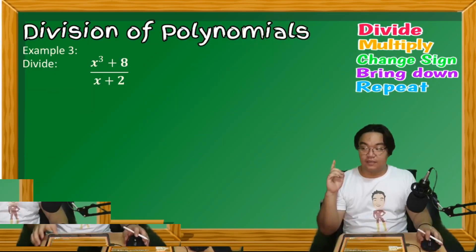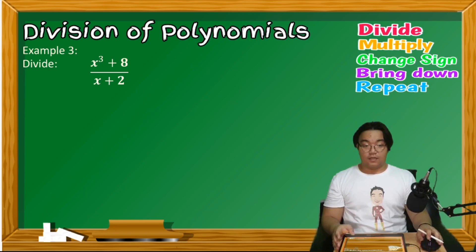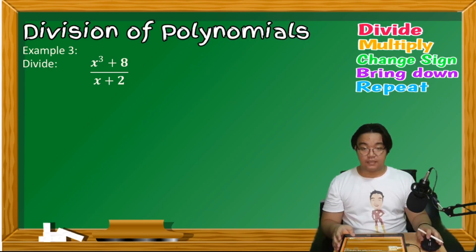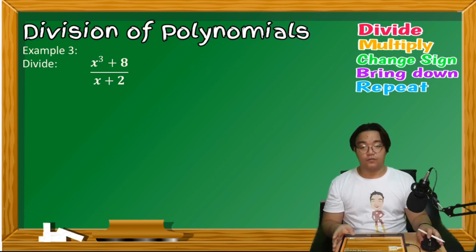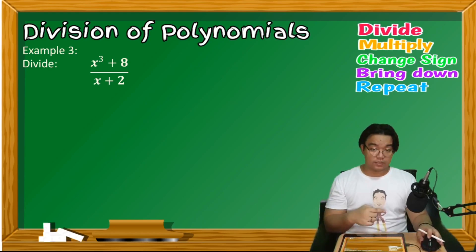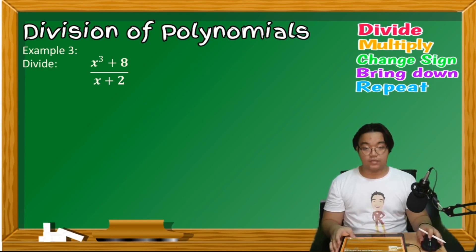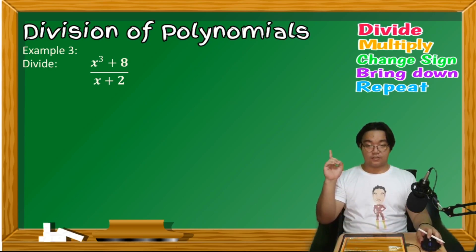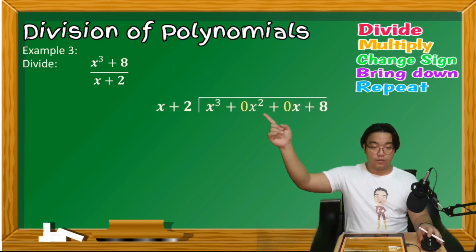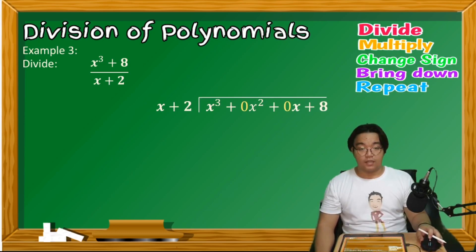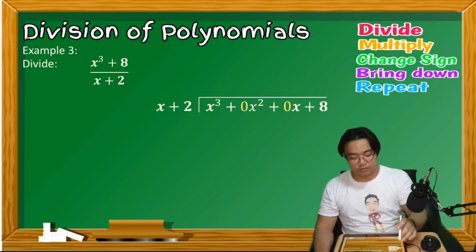Example 3: Divide x³ + 8 by x + 2. The dividend has only two terms but is degree 3. When writing it down, arrange terms from the highest to the lowest power and include zeros for missing terms. So x³ + 8 is written as x³ + 0x² + 0x + 8, since the x² and x terms are missing. Adding 0 does not change the value.